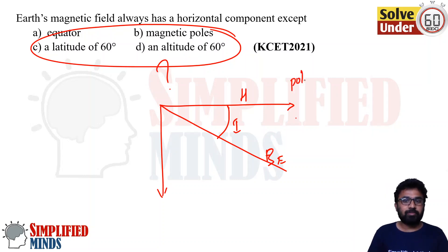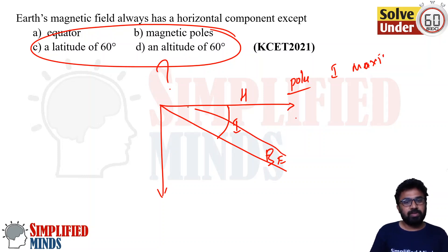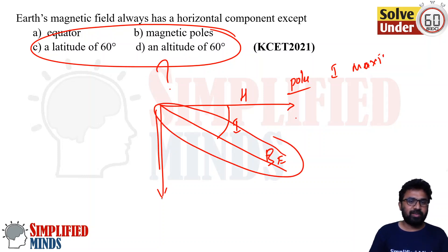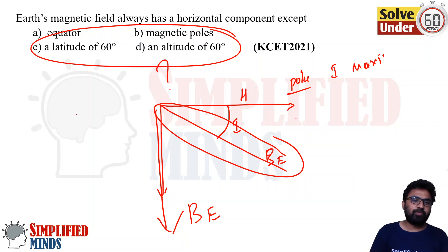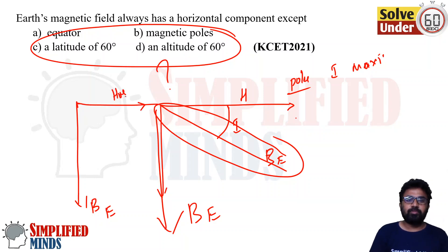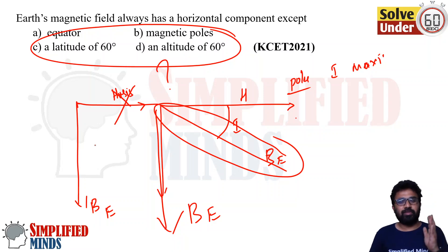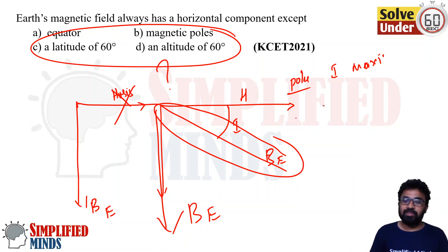At the poles, the dip angle I becomes maximum — 90 degrees. The total magnetic field becomes completely vertical. If it is vertical, then the horizontal component is zero. Any force acting only in the vertical direction has zero component in the horizontal direction. That is common sense. If a force has a certain angle, only then does it have two components.